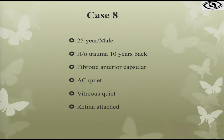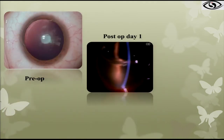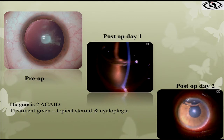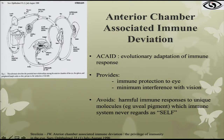Case 8: a young patient with trauma 10 years back, had a fibrotic anterior capsule and underwent uneventful cataract surgery. He developed severe anterior segment inflammation. We thought it was ACAD — anterior chamber-associated immune deviation — a sterile inflammation occurring due to immune reaction from proteins the body had been exposed to because of prior trauma. Treatment with topical steroid and cycloplegic resulted in a good response.